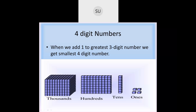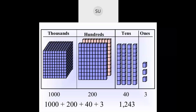So what is the 4-digit number shown here? We have 4 ones, 1 ten, 1 hundred, and 1 thousand. So that is 1000, 100, 10 and 4 — the 4-digit number is 1114.